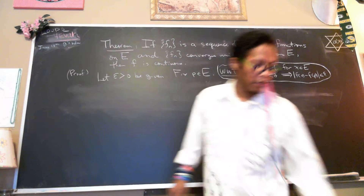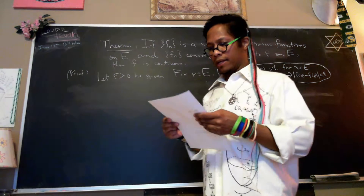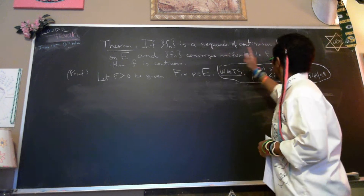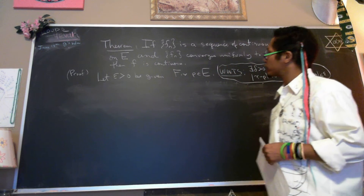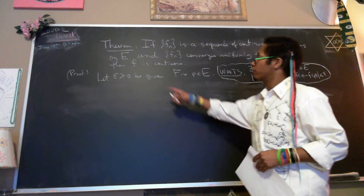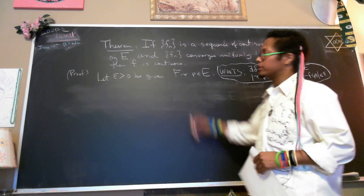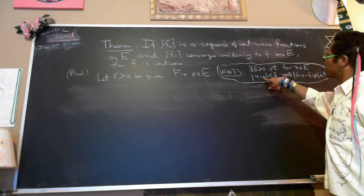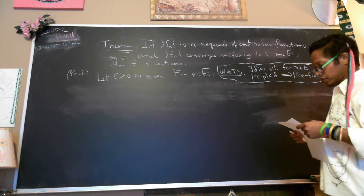Most of the proof is laid out by those motivating pictures. We're going to prove that if f_n is a sequence of continuous functions on E and the sequence converges uniformly to f on E, then the uniform limit function f is continuous. We start the proof the way every such proof starts: let epsilon greater than zero be given. Fix a point p in E. We want to show that f is continuous at p, meaning there exists delta greater than zero such that for x in E, if x is within delta distance of p, then f(x) is within epsilon distance of f(p).